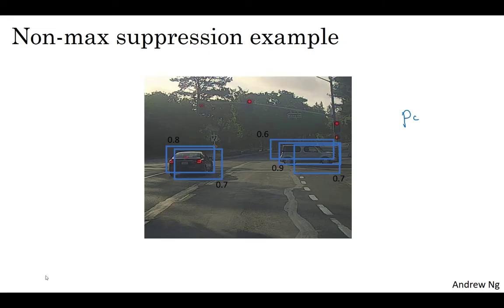So what non-max suppression does is it cleans up these detections so they end up with just one detection per car rather than multiple detections per car.